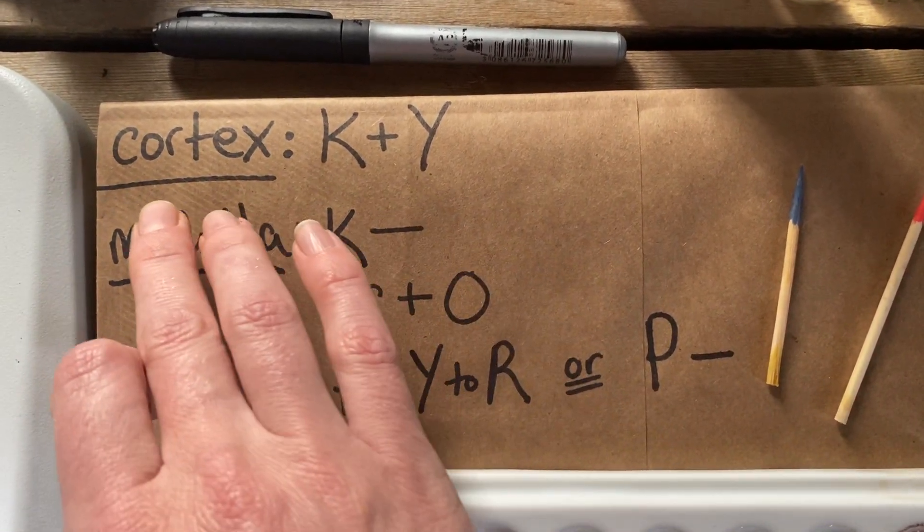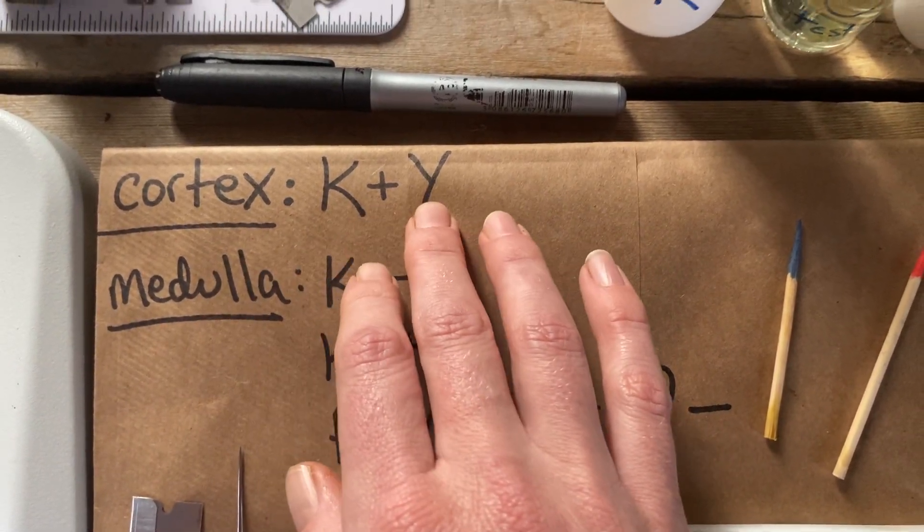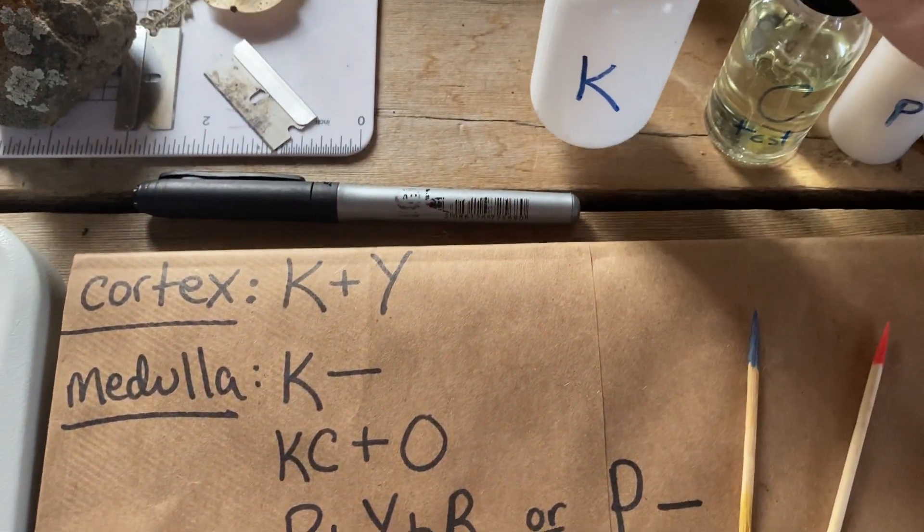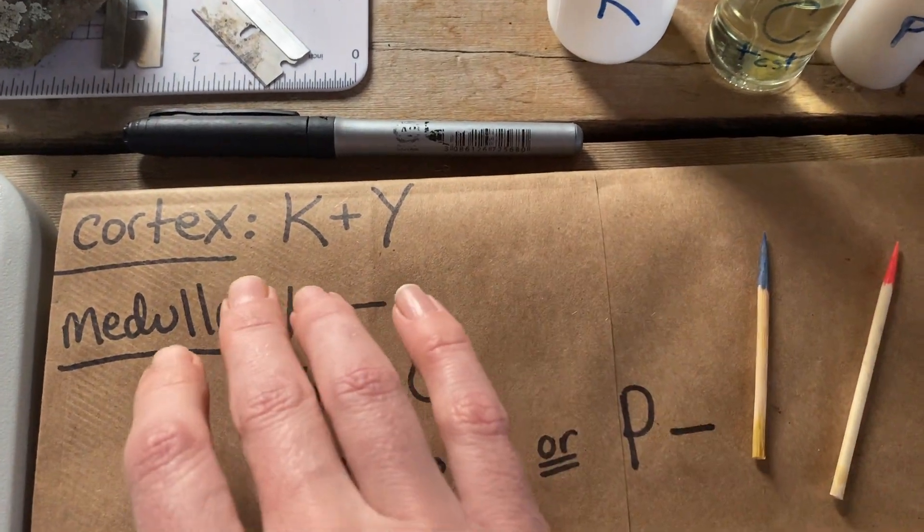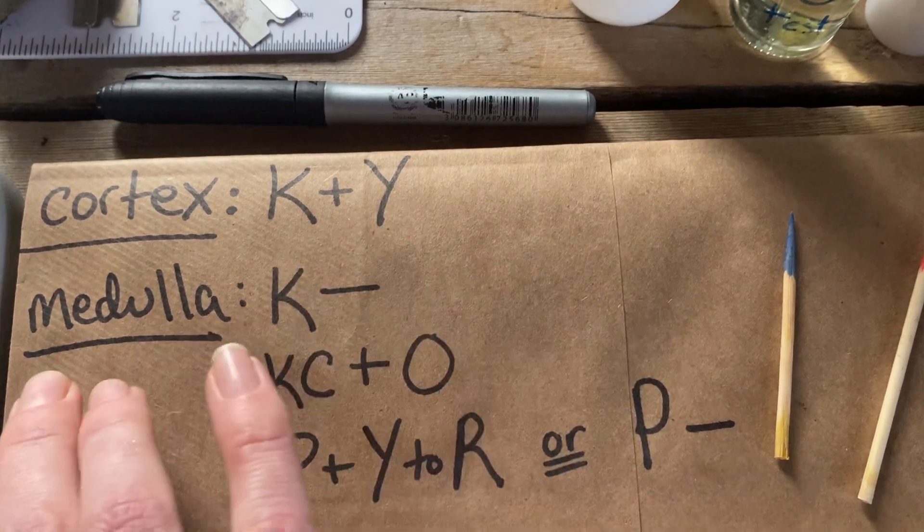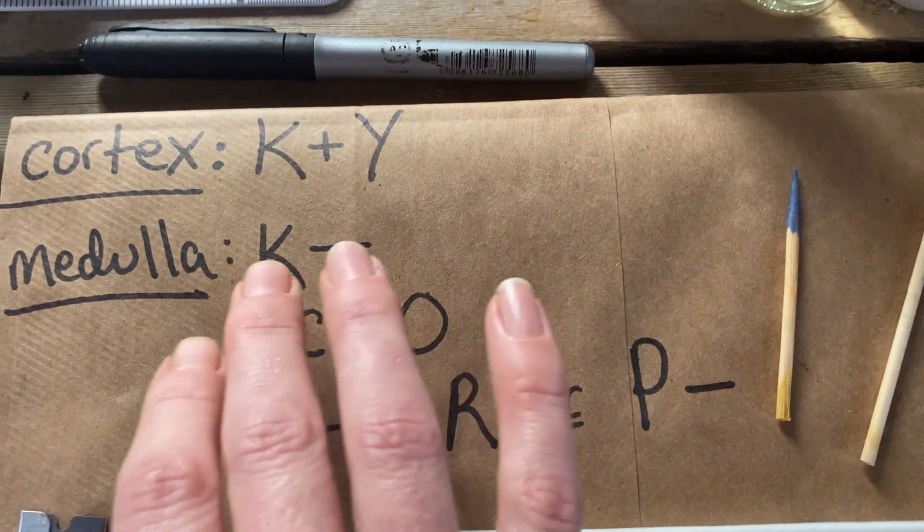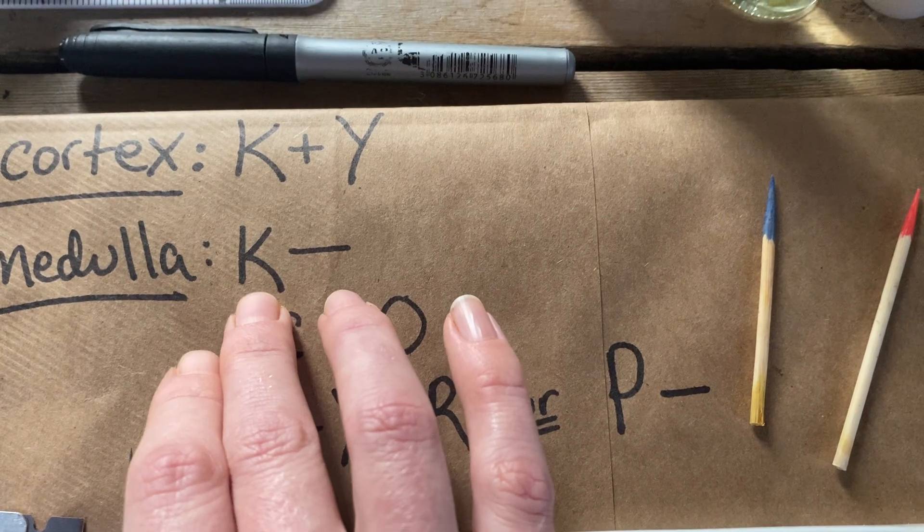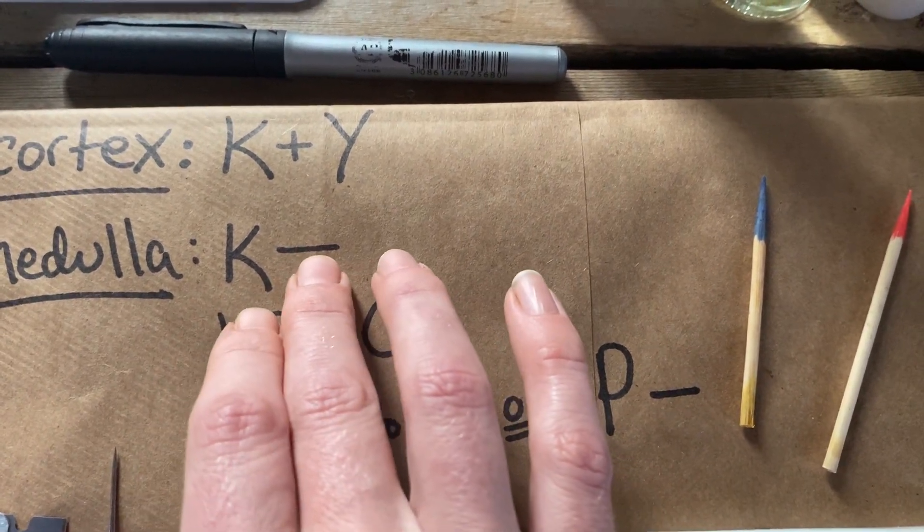In the cortex, we will be expecting to see K plus Y. So when I drop a little bit of the K test on the lichen cortex, I will see a color change, and that color change will be yellow. In the medulla, I will use a K spot test and only get no color change.